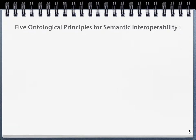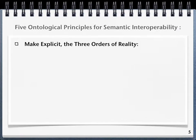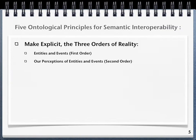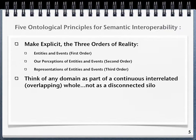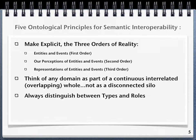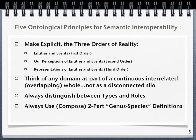The five ontological principles for semantic interoperability are: first, to make explicit the three orders of reality, wherein entities and events make up first-order reality, our perceptions of entities and events make up second-order reality, and representations of entities and events make up third-order reality. Second, think of any domain as part of a continuous, interrelated, and overlapping whole. Third, always distinguish between types and roles. Fourth, always use or create two-part genus-species definitions. And fifth, avoid conflation of dissimilar things. In what follows, I will describe each of these principles.